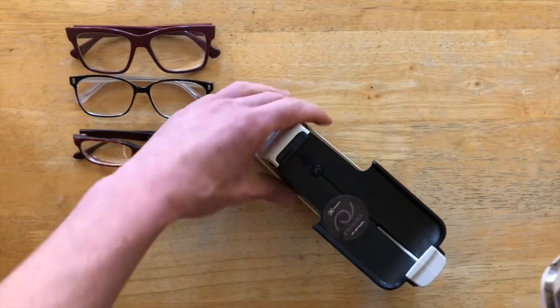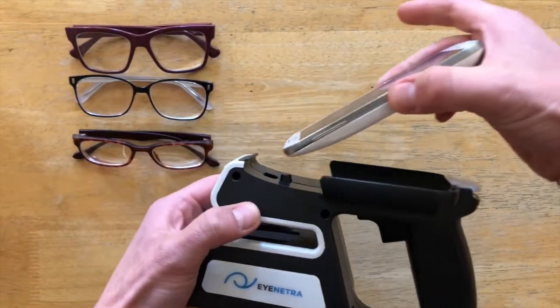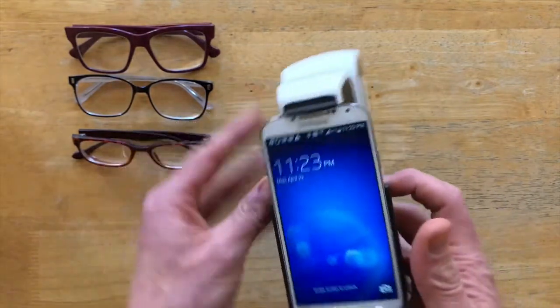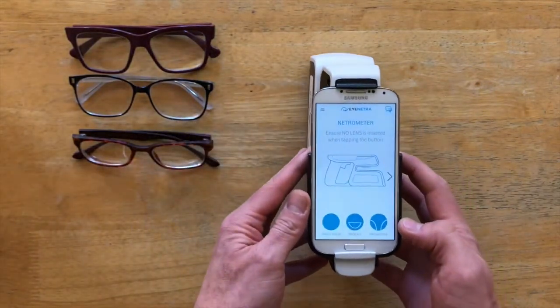First things first, to insert the phone into the Netrometer, I start by inserting the front first and then clipping in the back, and the application should open up automatically.